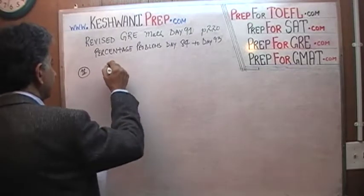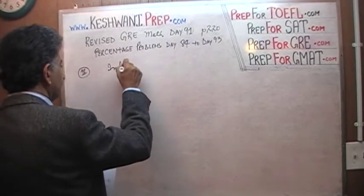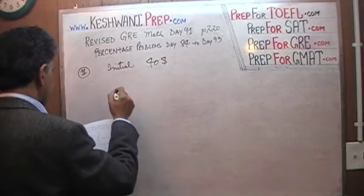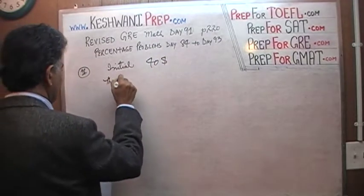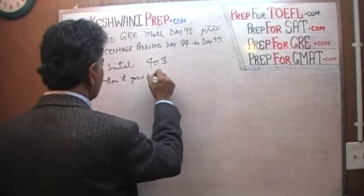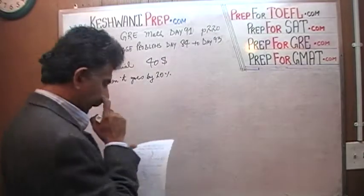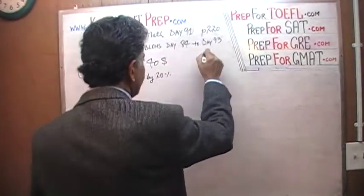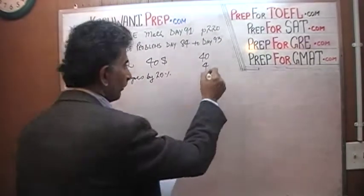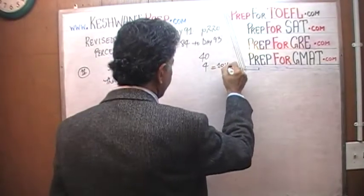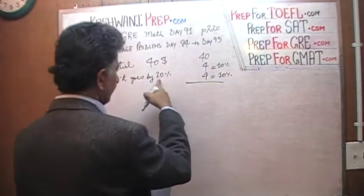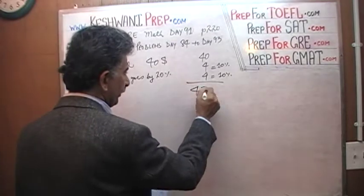If the value increases by 20% and then decreases by 25%. So initially it begins with $40, then it goes up by 20%. Here is your $40: 10% of 40 is 4, and 4 represents 10%. So if you add another 10%, 10% plus 10% is 20%, and it increases by 20%, so it goes up to $48.